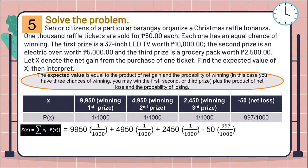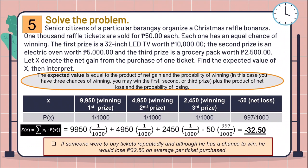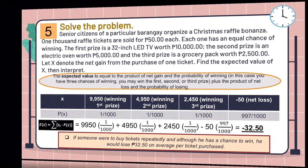Again, multiply the value of the random variable to their corresponding probability and get their summation, which is equal to negative 32.50. Or we can interpret this as, if someone were to buy tickets repeatedly and although he has a chance to win, he would lose 32.50 pesos on average per ticket purchased.